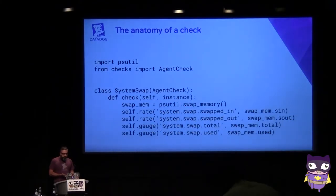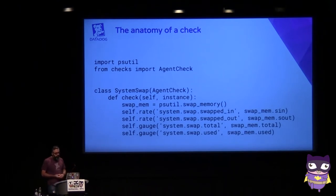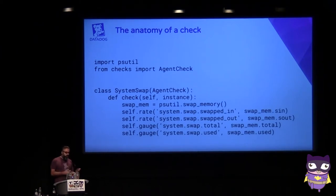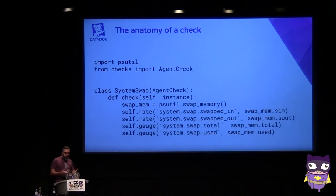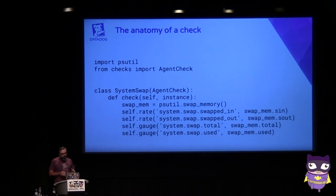This is how the average check looks like. It's just a Python class implementing a predefined interface. The class has to have a check method, which is called by the agent. In the body of this method you have the logic to collect the metrics and events, and you can use the Python API provided by the base class to send that data to our backend. The average check is way more complex than this, but you get the idea.